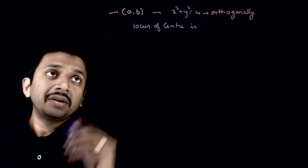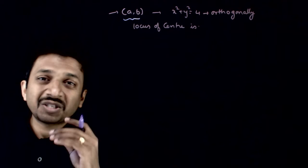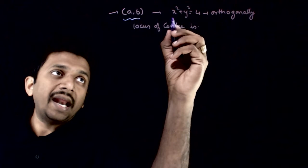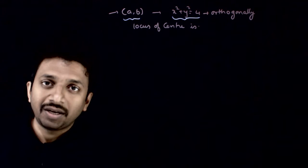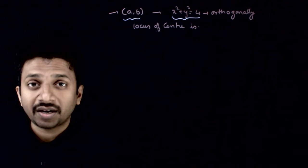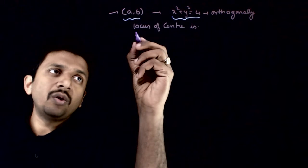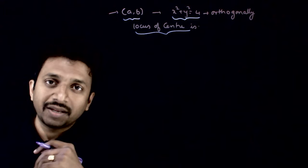Welcome students. In this question, given that you have a circle which passes through (a,b) and the circle cuts x² + y² = 4 orthogonally. If these two conditions are satisfied, what is the locus of the center of those circles?